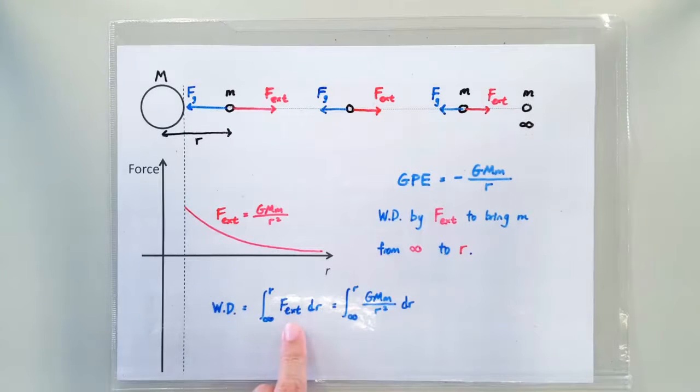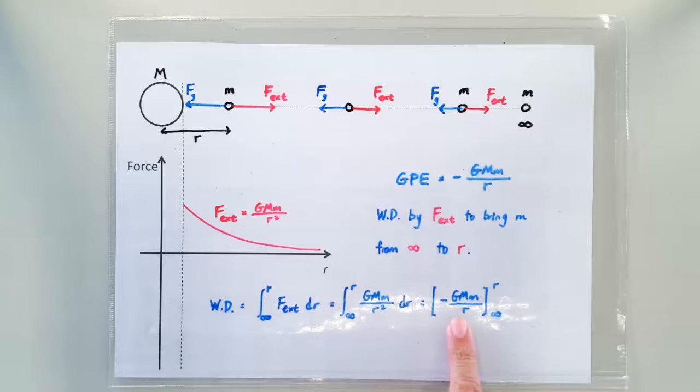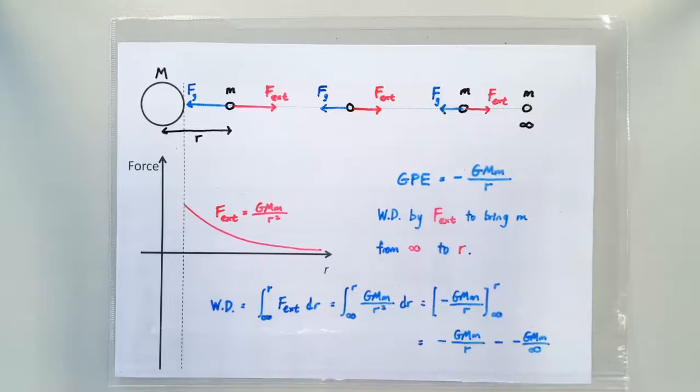We know that the magnitude of the external force is exactly GMM over R squared. What do you get when you integrate GMM over R squared? You get negative GMM over R. Put in the limits...